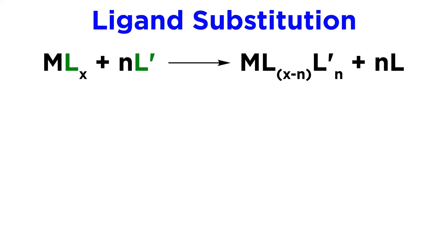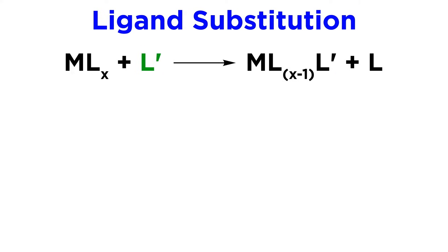We have two ligands, L and L', and the number of L ligands, represented by X, is reduced by N, while N L' ligands join the complex. To keep things simple, let's look primarily at situations in which only one ligand is exchanged. This will most commonly be a 2 electron process.